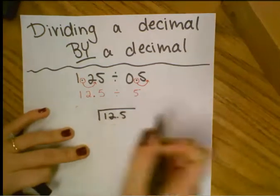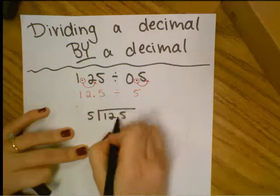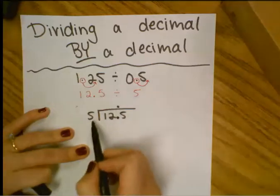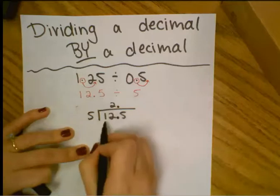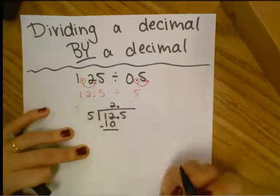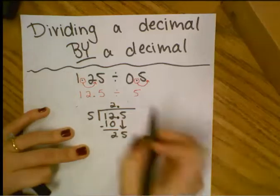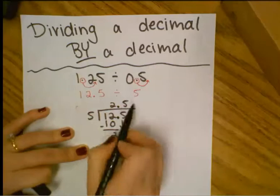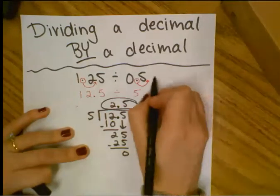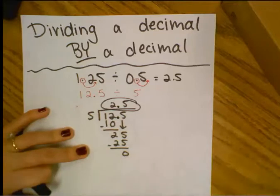So 12 and 5 tenths divided by 5. I know 5 can't go into 1, but let me bring my decimal up first before I keep going. 5 can go into 12, and you can go into 12 two times. That'll get me 10. I subtract it. I get 2. Bring down my 5. 5 times 5 is 25. Subtract it. So here's my actual answer.